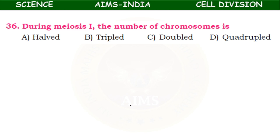During meiosis 1, the number of chromosomes is — what happens? The main function of meiosis 1 is to reduce the chromosome numbers to half of the parent cell. That is why it is called reduction division. So the chromosome number is reduced to half.